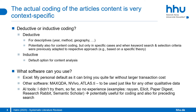The actual coding of the articles in your sample is very context-specific, so it might be completely different from one review to another depending on the type of articles and the field you're working in. The first question is whether you want to engage in deductive or inductive coding. Deductive coding means you have predetermined categories — something you very often do for descriptive statistics, such as the year of the papers, methods, or geography of authors.